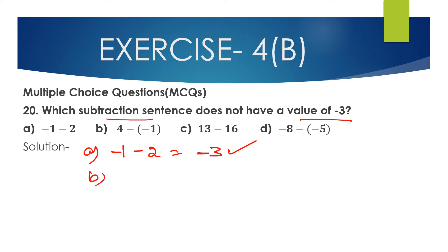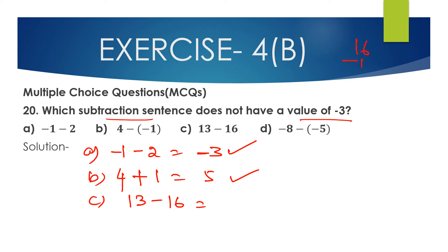Option B: 4 minus of minus 1. Minus of minus is plus, so 4 plus 1 equals 5 — this is positive 5, not minus 3. Option C: 13 minus 16. Subtracting: 16 minus 13 equals 3, and placing the sign of 16 (which is negative) gives minus 3.